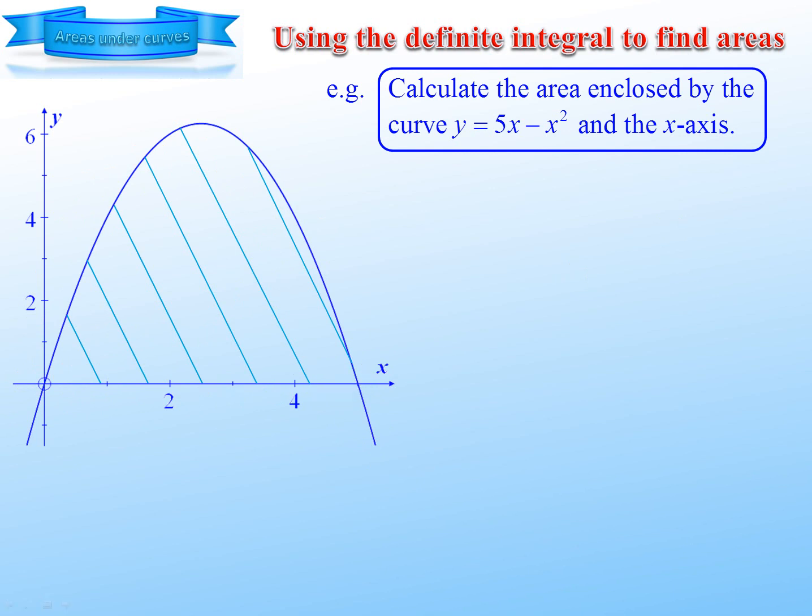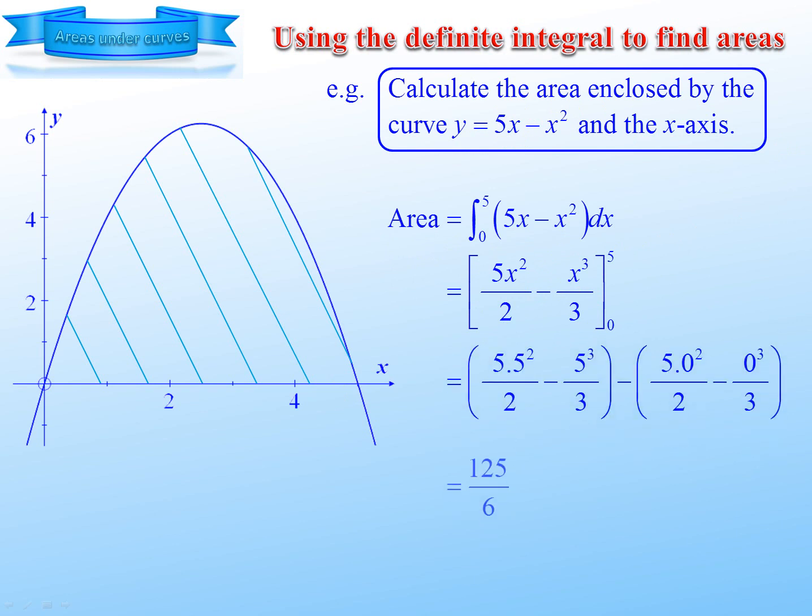So we're going to find the definite integral from 0 to 5 of this function. It's a standard integral. Substitute 5, subtract, substitute 0. And there is the area: 125 over 6.